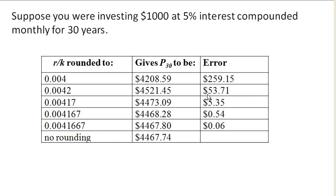That's a really big error, and that is a big problem. If we kept one more decimal place, then we'd only have $53 of error.